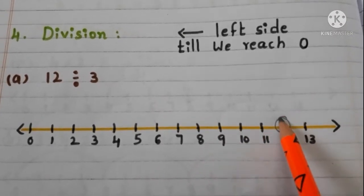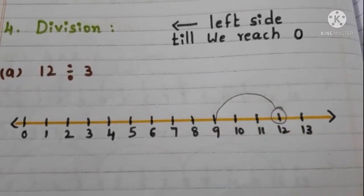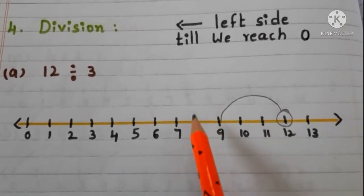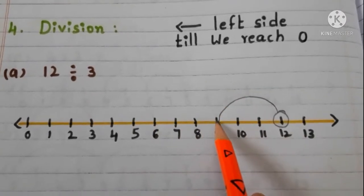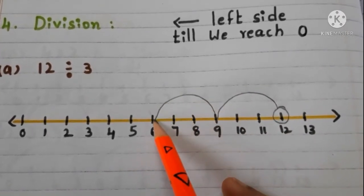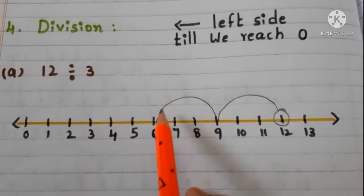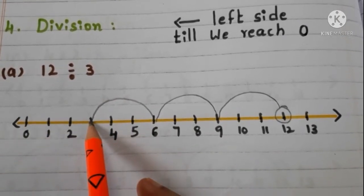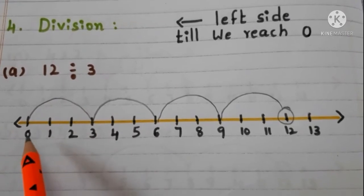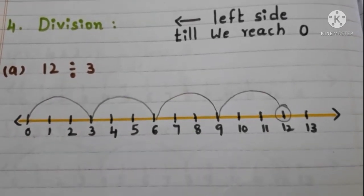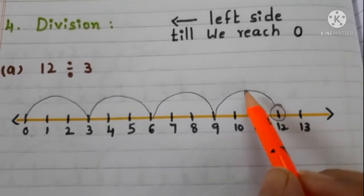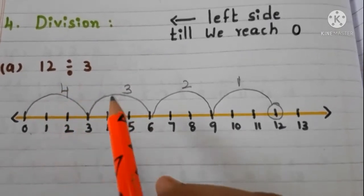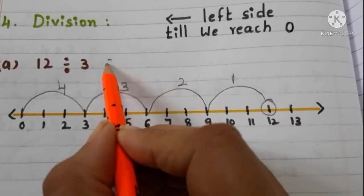Again 3 units: 1, 2, 3 — jump from here to here. Again: 1, 2, 3 — jump from here to here. Again: 1, 2, 3 — jump from here to here. We reach 0. Now let us count how many jumps we made: 1, 2, 3, 4. We made 4 jumps, so the answer is 4.